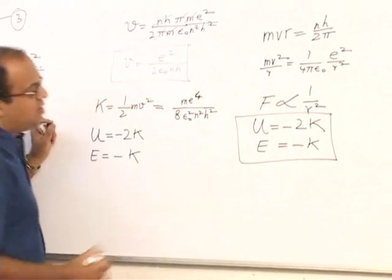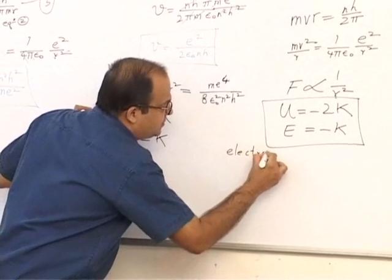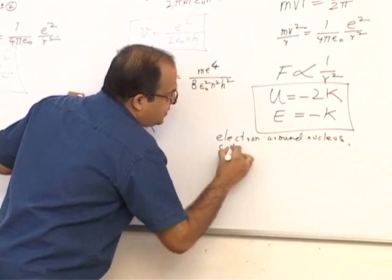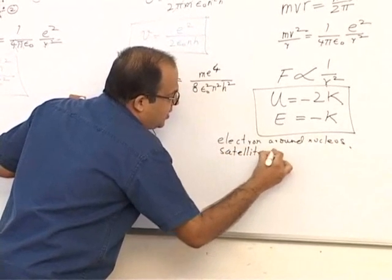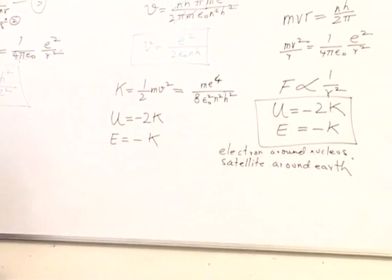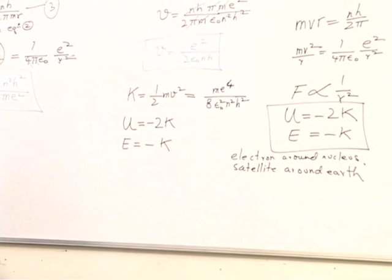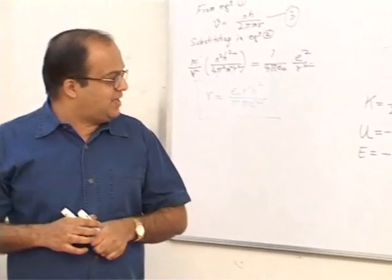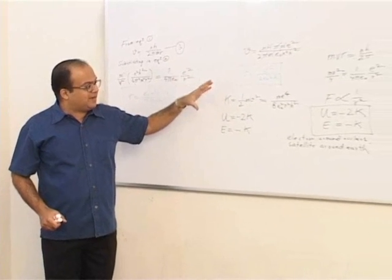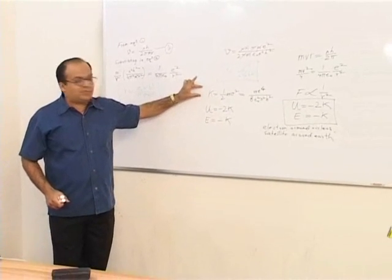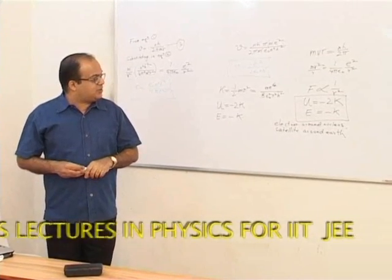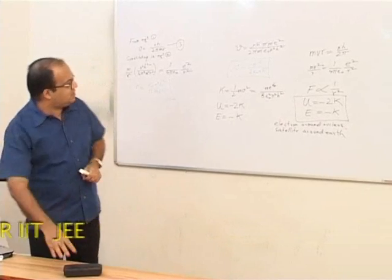This is valid for the motion of electrons around the nucleus and for satellites around the Earth. In both situations, potential energy = −2K and total energy = −K. For a closed system, potential energy and total energy will be negative, while kinetic energy is always positive. So K is positive, U = −2K, and total energy = −K.